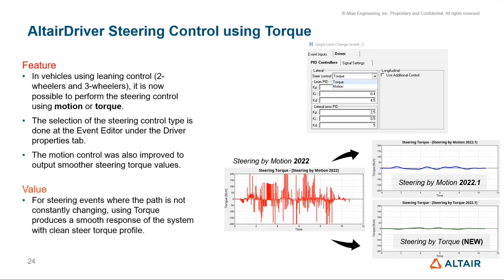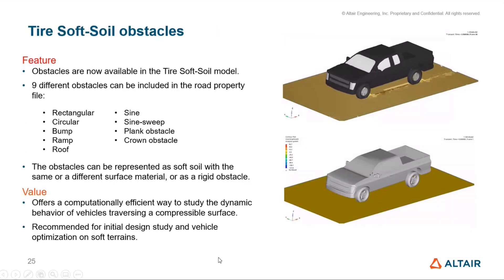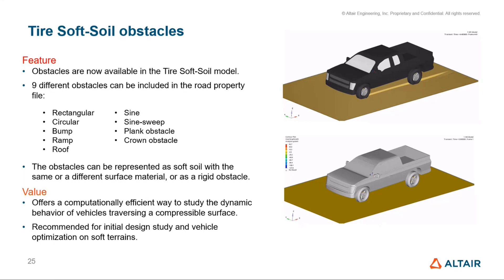There's an update to the events. In the full vehicle, it is now possible to control the steering using torque. This option is available in the driver tab of the event editor and produces smoother torque characteristics for events where the path is not changing frequently. The tire soft soil model has been extended to include obstacles — nine different types — offering a more efficient way of solving uneven compressible surfaces, which are good for initial design studies.